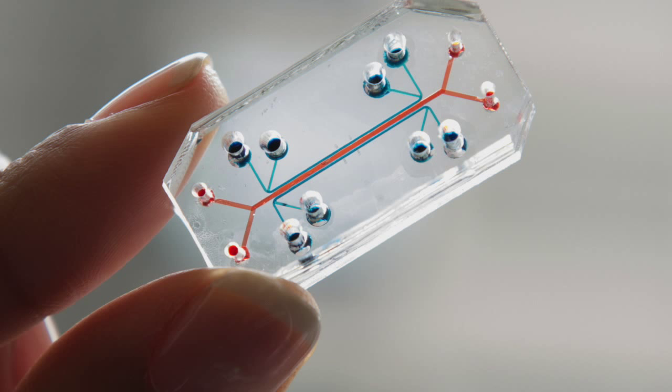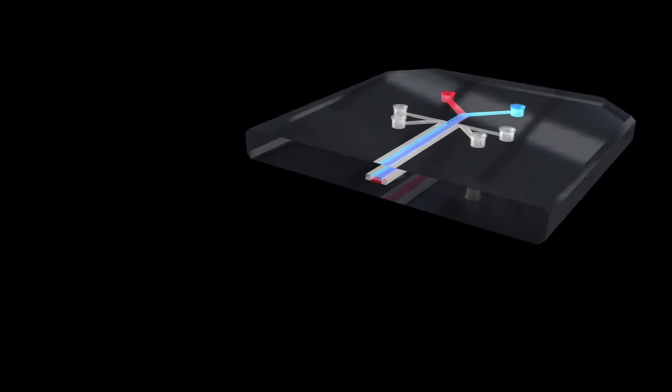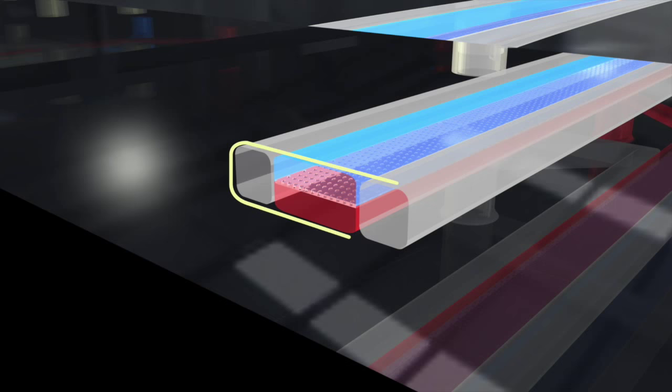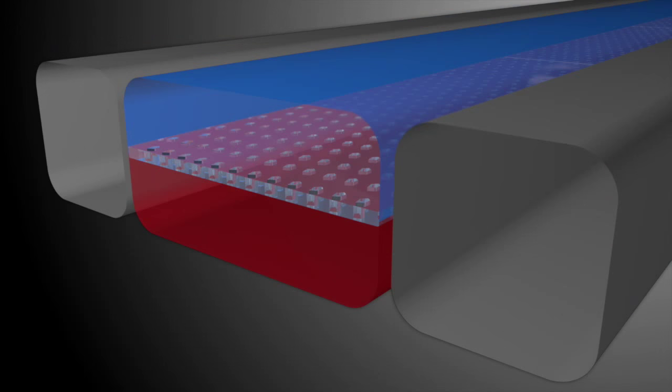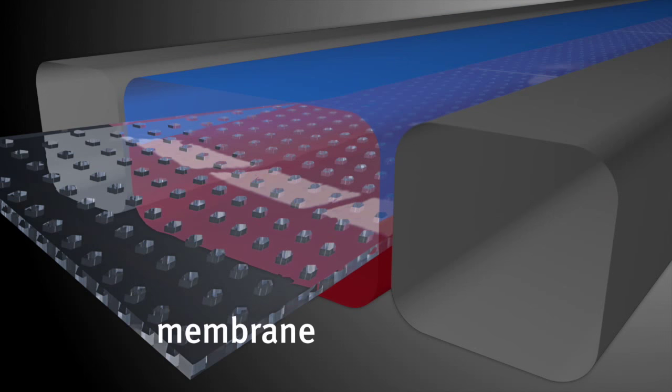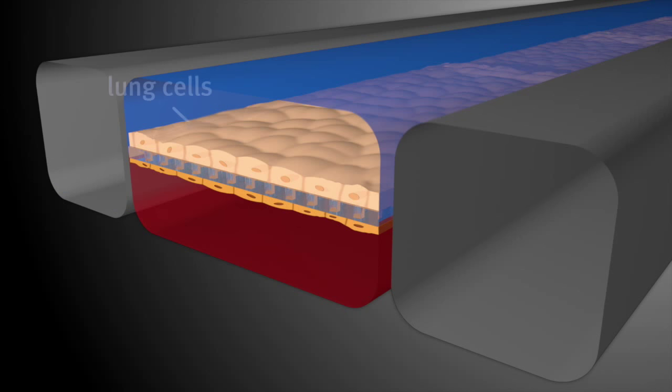Human organs-on-chips are basically small devices about the size of a computer memory stick. They're made of clear polymer, they're flexible and biocompatible, and they're populated with human cells. Basically, they mimic the physiological function of different organs.